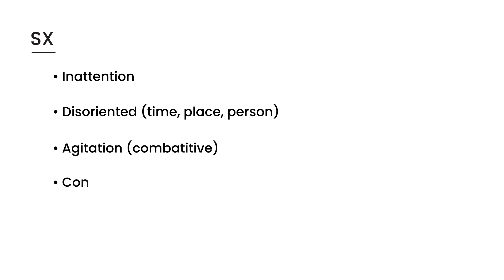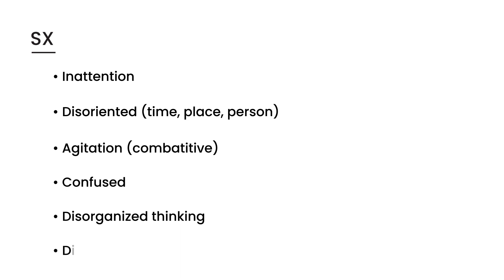Another symptom is confusion — which of course is part of the alternative name for delirium, acute confusional state. Patients also exhibit disorganized thinking. Additionally, their speech is disordered and often incoherent. So the patient typically presents in a hospital setting, usually in the ICU after some sort of infection or surgery, and the patient is almost always elderly.